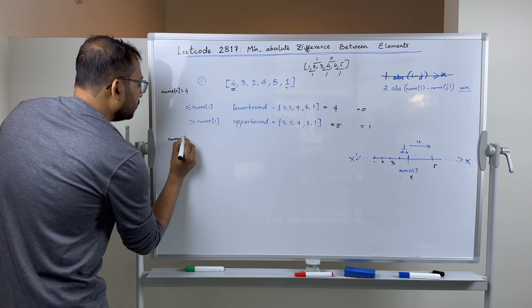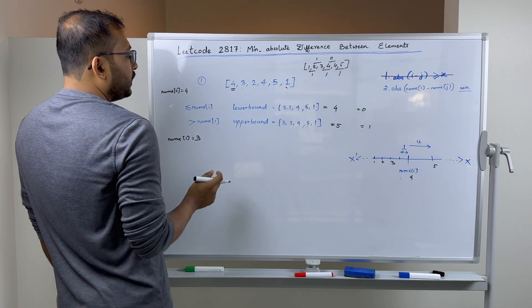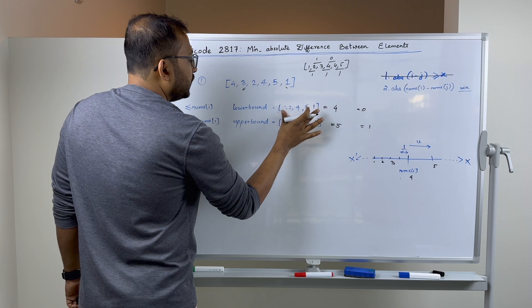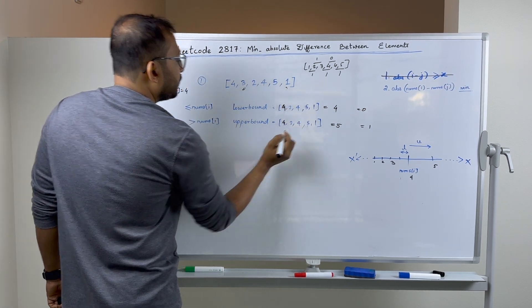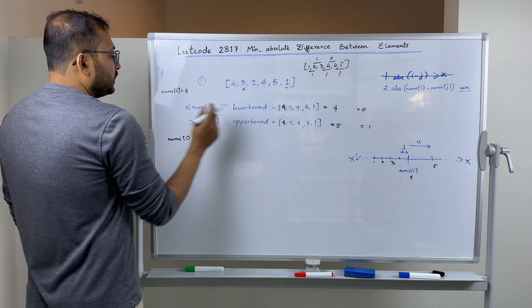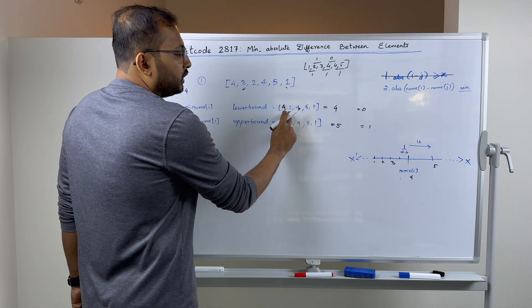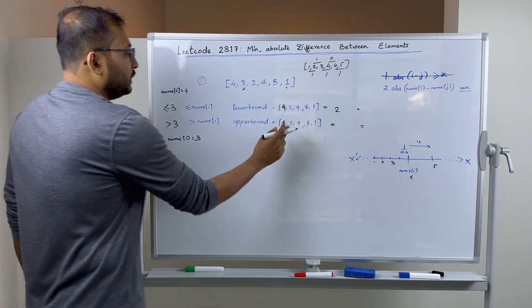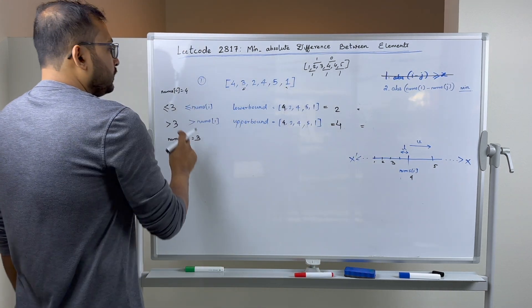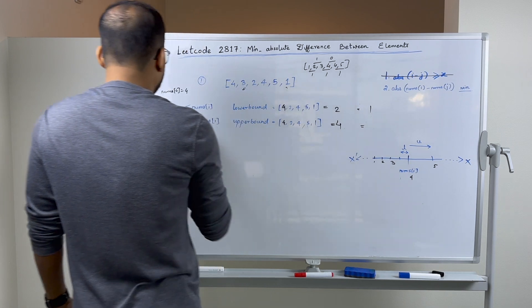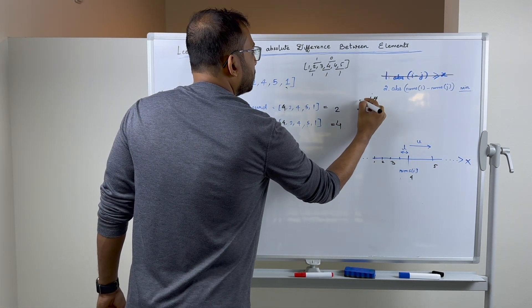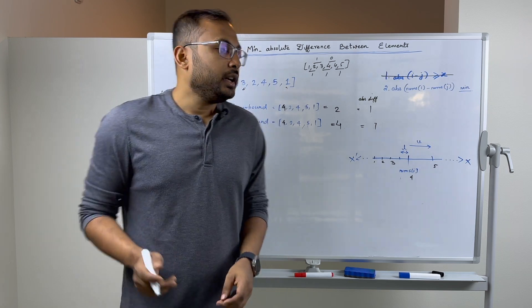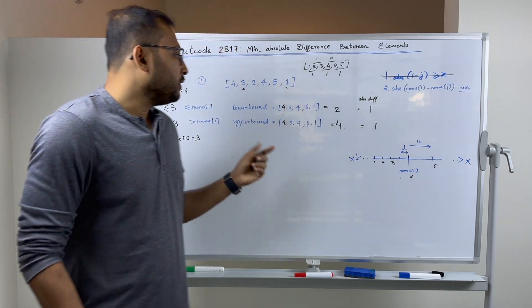Similarly for nums[1] = 3: the remaining elements are [4, 2, 4, 5, 1]. The lower bound for 3 is 2 (closest element less than or equal to 3). The upper bound for 3 is 4. The differences are 3 minus 2 = 1 and 3 minus 4 = 1 (absolute value). So the minimum difference if we take index 1 as part of the answer is 1. The idea is: for every index, keep all eligible elements in a set and find lower and upper bounds, which takes O(log n) time.